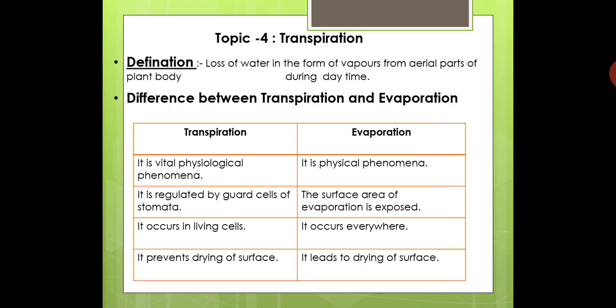A question arises: what is the difference between transpiration and evaporation? In both, there is loss of water in the form of vapors. The first difference is that transpiration takes place in living cells — it is a vital physiological phenomenon — while evaporation is a physical phenomenon that occurs everywhere, for example from dams or rivers during summer.